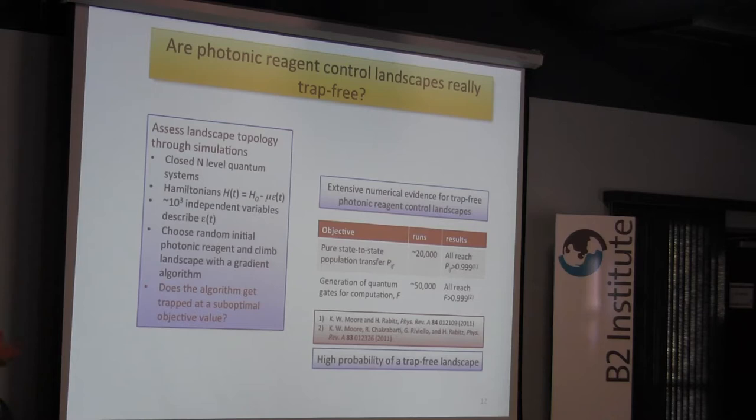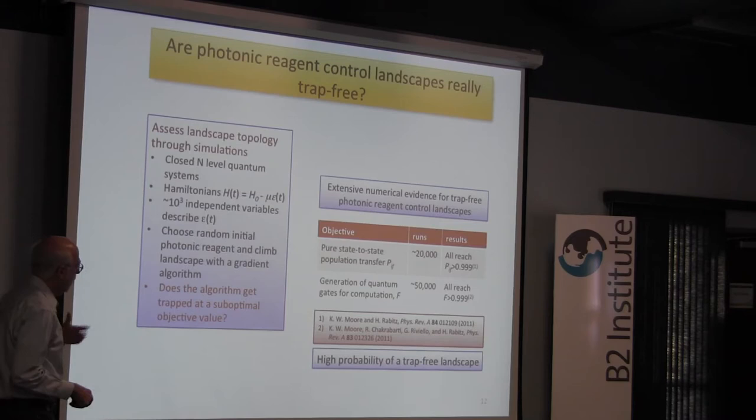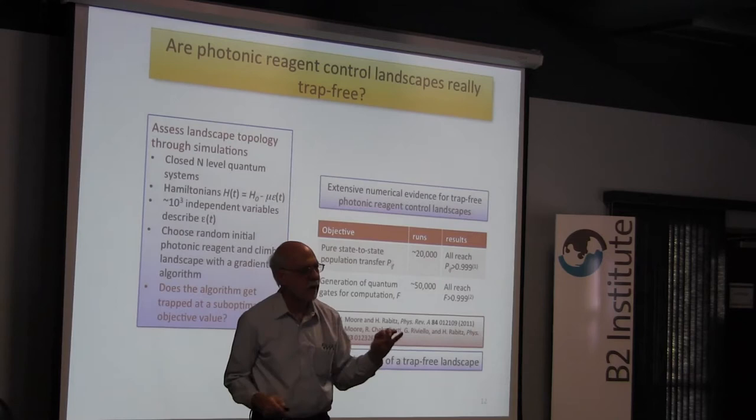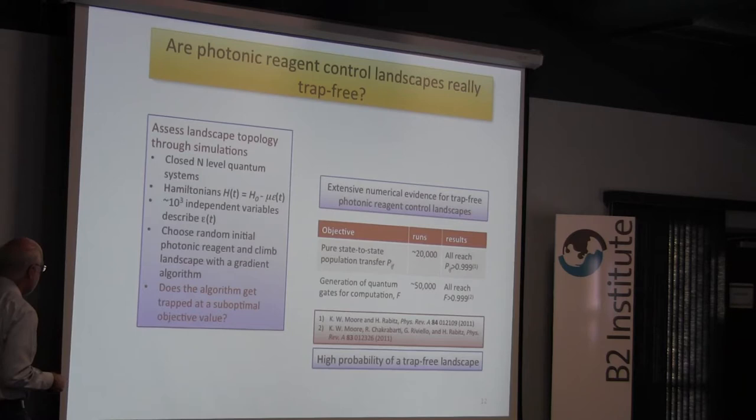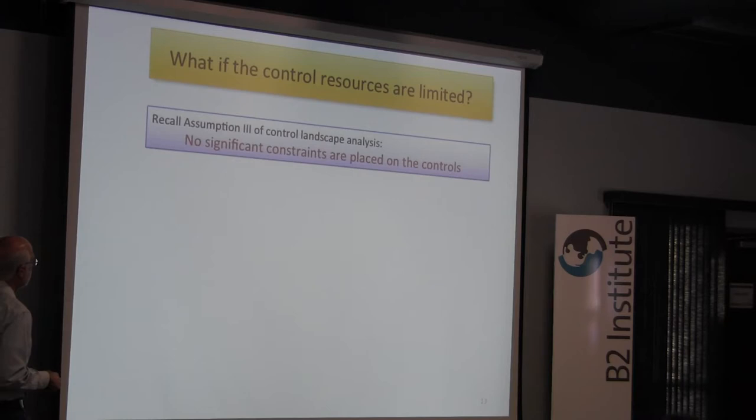This goes back to the literature. People commonly get 95% in the literature, and the reason they generally don't get 0.999 is they have some other costs in there, like fluence or laser energy or some other limitation. These simulations carefully avoided that. So now we come back to this very important issue of control resources, which are constraints.